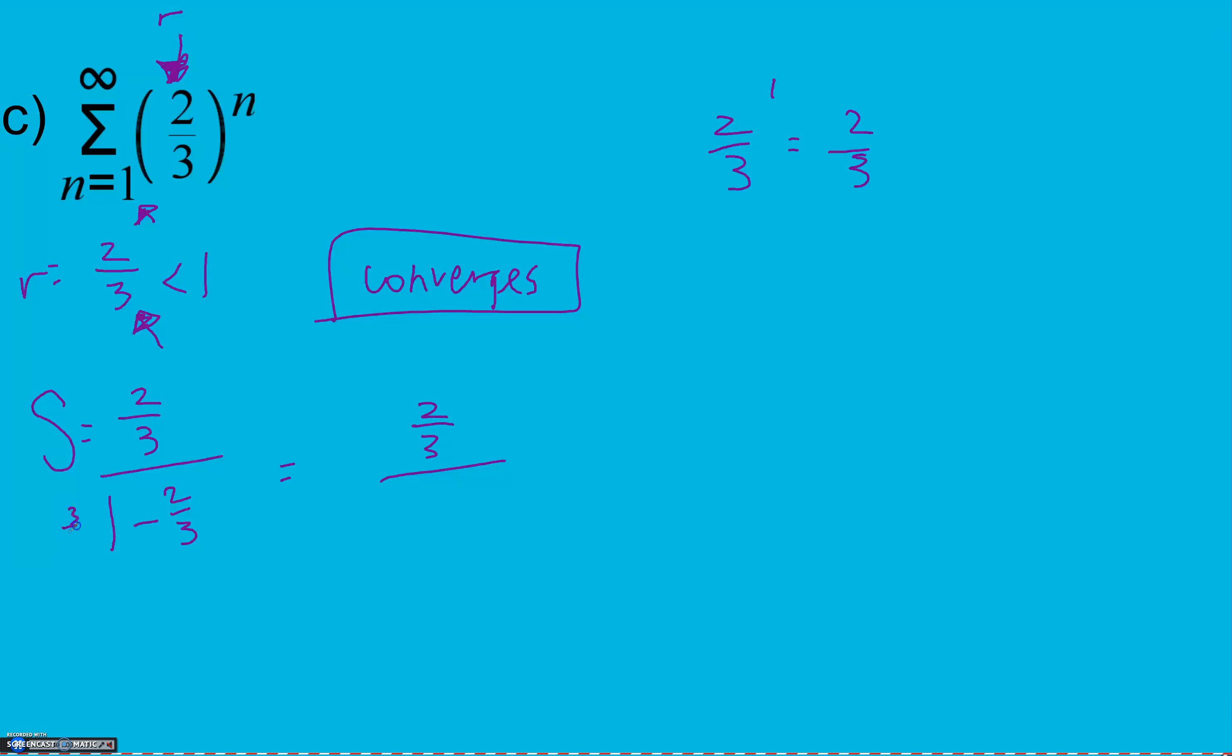One minus two thirds. We can rewrite this if we want to as three over three. Common denominator is three. Subtract three minus two, we get one third. Again, to get rid of division with fractions, we switch to multiplication and take our reciprocal. So instead of being one over three, it's going to be three over one. Cross cancel our threes. Three divided by three is one. And we end up with two.